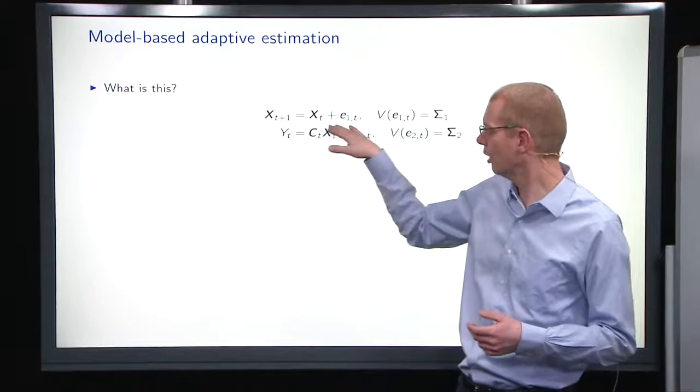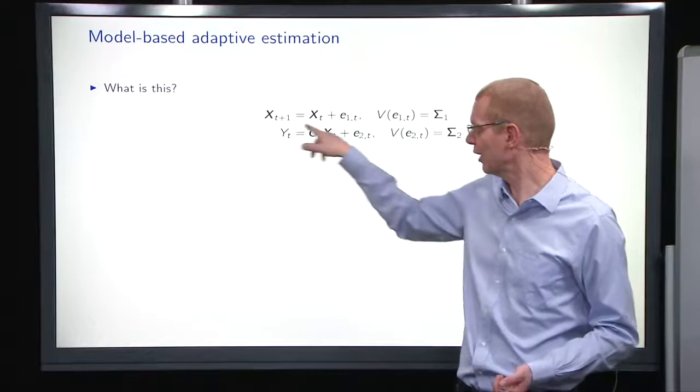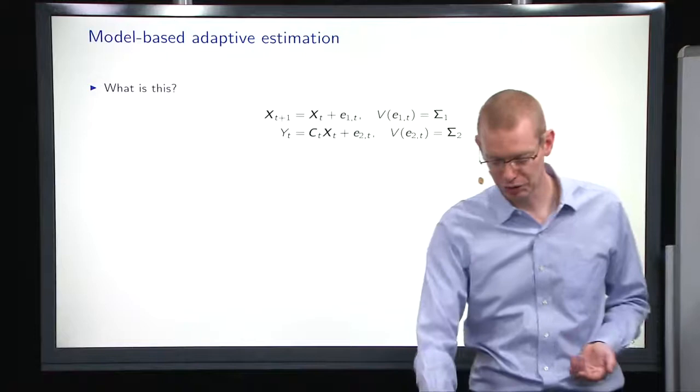But then if we look at the parameters that we have formulated up here, we formulate a process for the parameters where we say it's what it was before, plus some noise. So we say we have a random walk for the parameters that we use in a regression model. That's one interpretation at least.